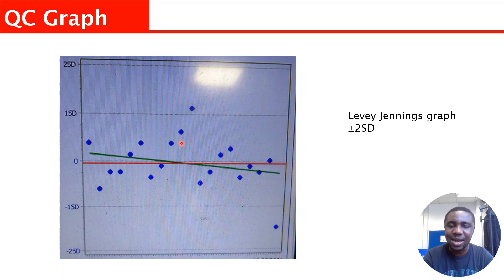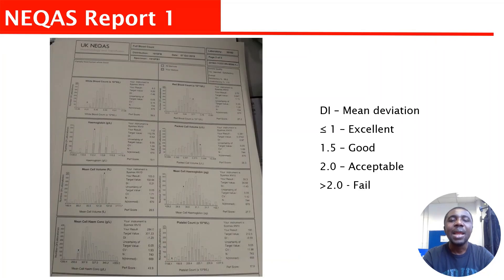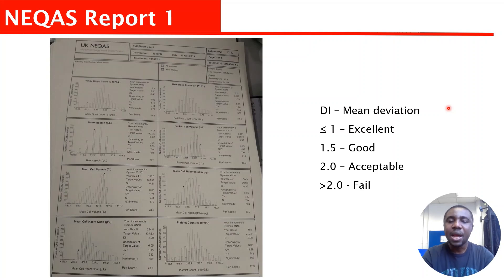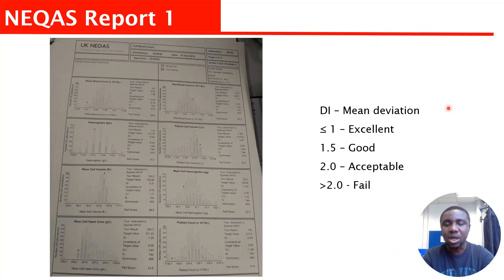So the Levey-Jennings graph once again says that your quality control sample has passed if it is within plus or minus 2 standard deviation. Now let us look at the NERQAS report. If they present this report during your interview, don't worry too much. Where I want you to go straight and look at is the DI, which is your mean deviation — that is where I want you to look. Once you look at the DI, the number on that DI should be your interpretation. Remember that every laboratory is sent samples from NERQAS to run, and then they submit their results, and NERQAS gives them a report. The report comes in this form.